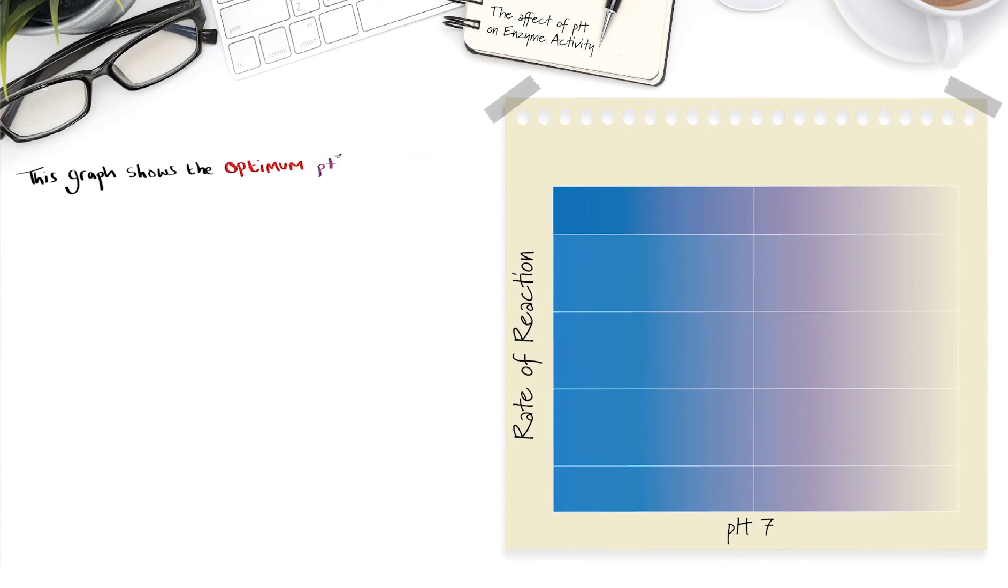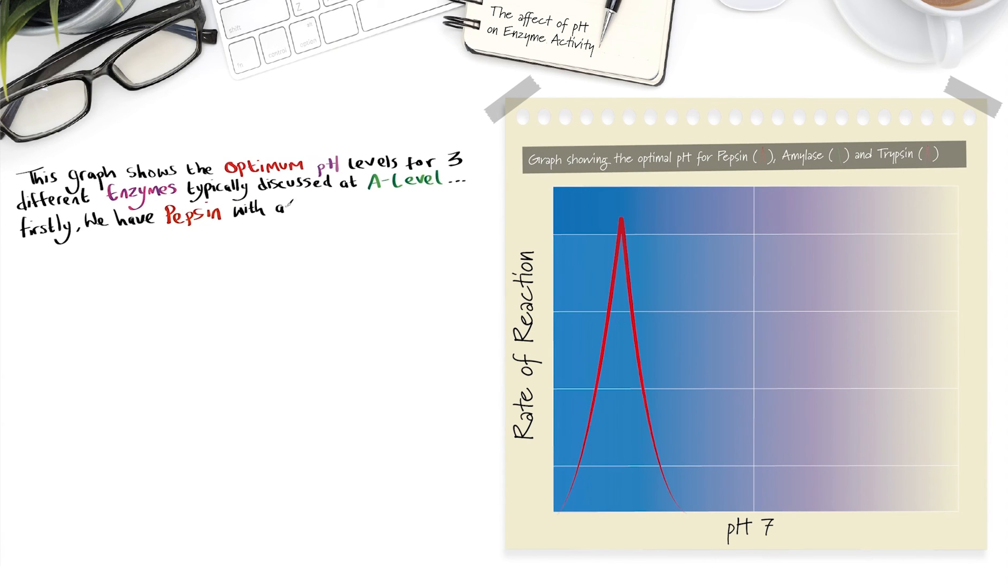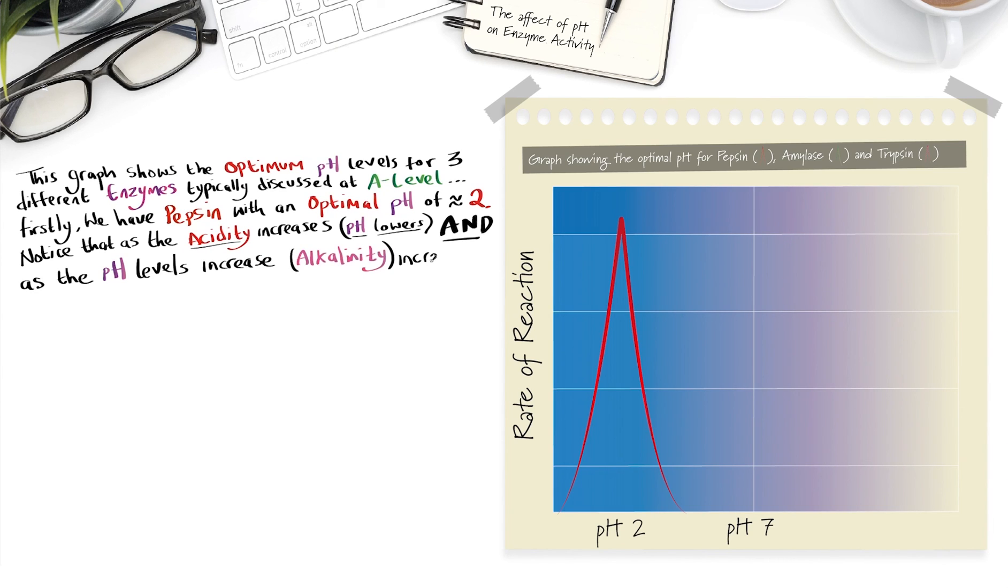This graph shows the optimum pH levels for three different enzymes, typically discussed at A level. Firstly, we have pepsin, with an optimal pH of approximately 2. Notice that as the acidity increases, pH levels lower, and as the pH levels increase, alkalinity increases. The enzyme denatures. The same is true for both amylase and trypsin.